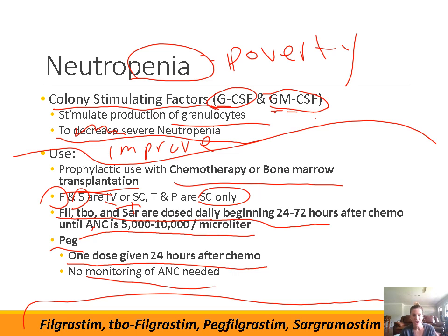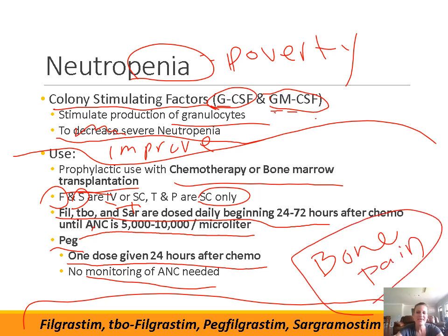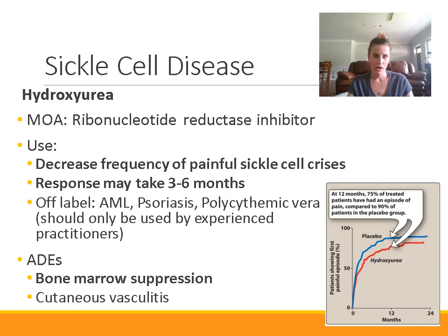Bone pain is a common adverse drug effect with colony-stimulating factors. That's the case with anything affecting the marrow because the marrow is in the bones — anytime you give a drug that stimulates bone marrow activity, it frequently causes bone pain.